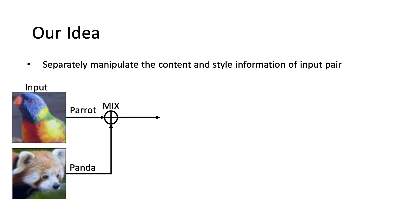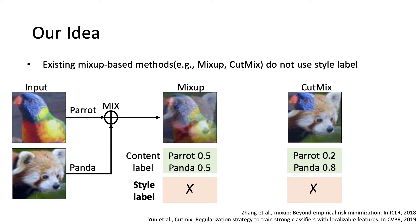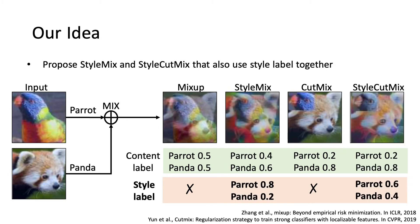Our idea is to separately manipulate the content and style information of an input pair. Simply put, mix-up is a method of synthesizing two training samples. Mix-up and cut-mix interpolate labels using only content information. Our StyleMix uses both the content label and style label of two input images, making it possible to distinguish the shape and texture of the image. We also develop StyleCutMix by utilizing content components that are proportional to the size of the patch area.